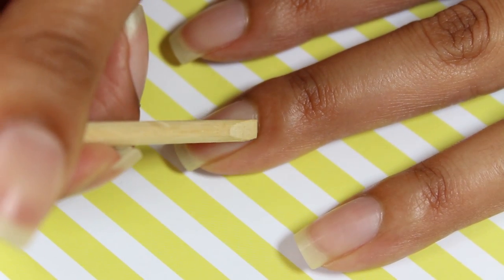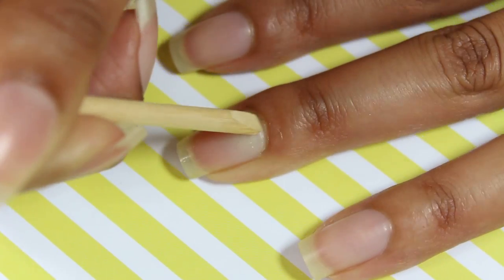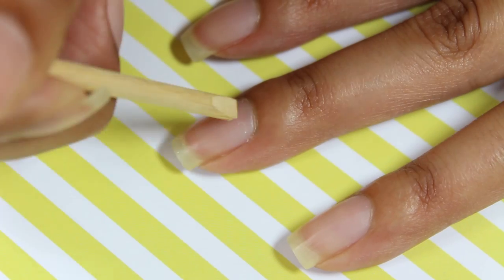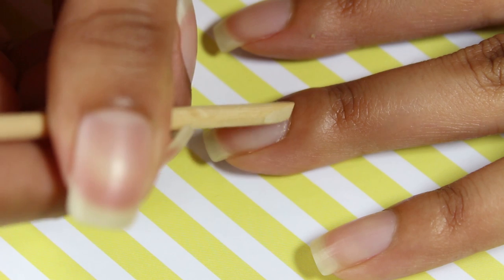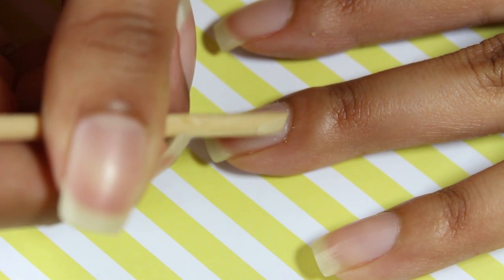After drying my hands I then begin pushing my cuticles back using a wooden stick. Once I push the cuticles back I then turn the stick on its side and scrape along the cuticle just to get rid of any of the skin that's on the nail. I do this very lightly in order to not scratch up the nail and not to cause any ridges in the nail.